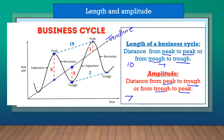You can also measure the amplitude from trough to peak. Starting at the trough, go from the trough to the trend line — that's 2 — and then from the trend line to the next peak, which is 1. So that amplitude would be 3.